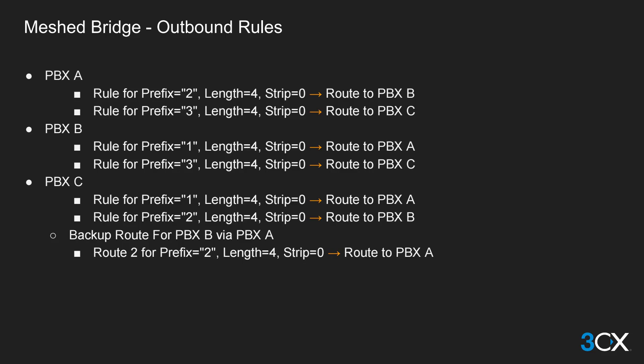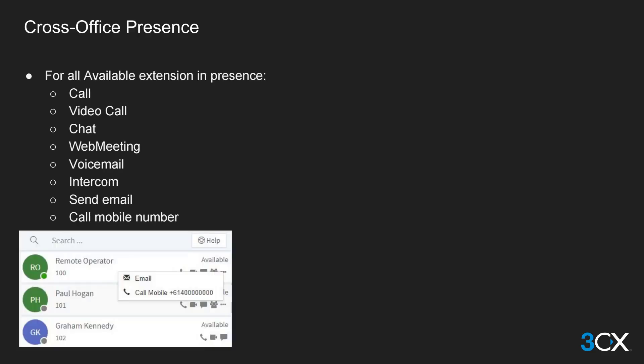You can also define a backup route to send calls to PBX B through PBX A — simply define PBX A as route number 2. With the 3CX Web Client you are able to see the presence of remote extensions if you have been given access, and you will be able to perform a variety of functions to interact with those extensions as well.